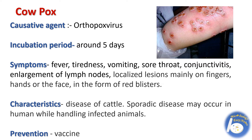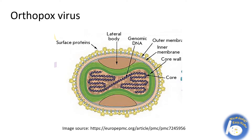This disease mainly occurs in cattle; sporadic cases may also occur in humans while handling infected animals. Prevention of the disease is by vaccine. This is the diagram of Orthopox virus, which has genomic DNA in the center, surface proteins responsible for the disease, and an envelope.